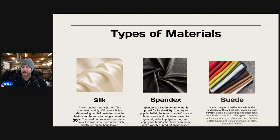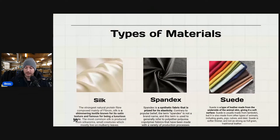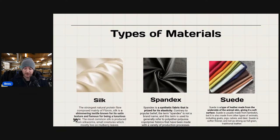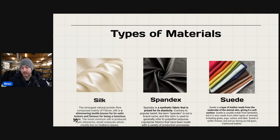Suede is a good one — I love to pick it up. Suede is a type of leather made from the underside of the animal skin, giving it a soft surface. It's usually made from lambskin, but also from goats, pigs, calves, and deer. Suede is softer, thinner, and not as strong as full-grain traditional leather. Suede shoes, suede hats, suede shirts — I'm picking up suede no matter what.